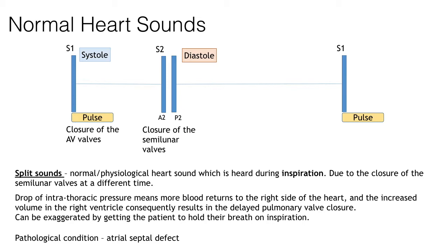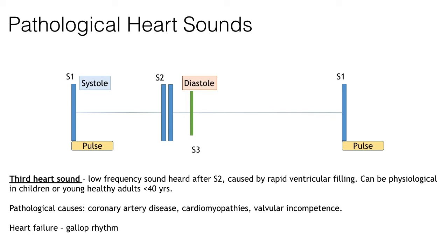On auscultation you're likely to hear something like this. The first pathological heart sound is S3 — an added heart sound, low frequency, heard after S2. It is caused by rapid ventricular filling and can be physiological in children or young healthy adults. However if heard in the older population, you might be thinking of a pathological cause such as coronary artery disease, cardiomyopathies or valvular incompetency.